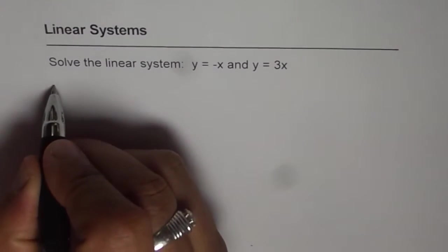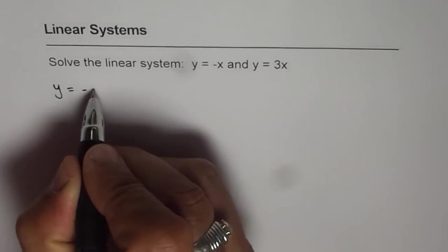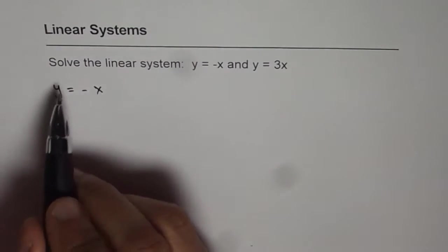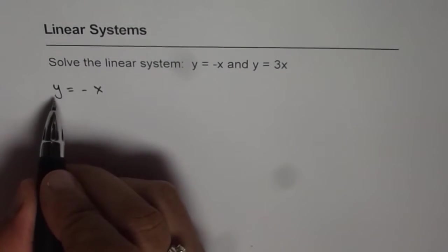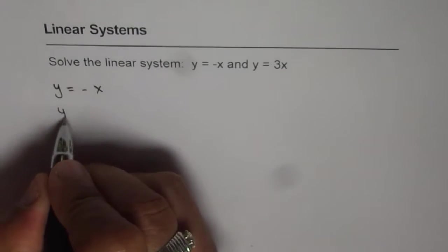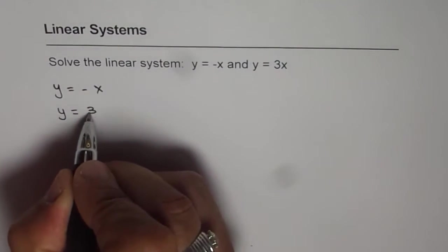First step is write down your equations clearly. So we have two equations that form the linear system: y equals minus x and y equals 3x.